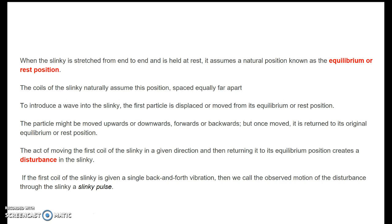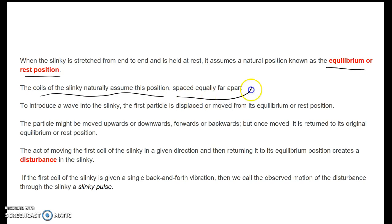Now, some terminology here to help you. When we take the slinky and stretch it from end to end, it is at rest. This is the equilibrium or rest position that we previously talked about with vibrations. The coils of a slinky will assume this position, normally spaced equally apart. To introduce a wave, we just have to displace or move the particle from its equilibrium position — so we take the end of the slinky and we move it.